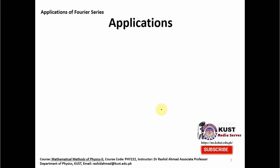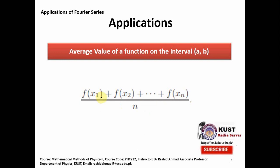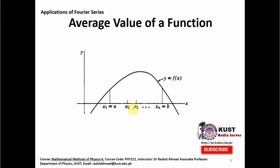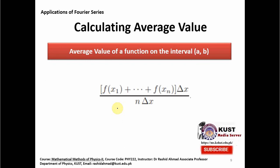To find the average value we sum the values of the function at the interval points — f(x₁), f(x₂), and so on up to f(xₙ) — and divide by the total number of such values. The difference between two neighboring points is Δx. We bring Δx into the average value formula by multiplying numerator and denominator by Δx. Since n·Δx = b − a, multiplying the number of intervals by the size of a single interval gives the total length b − a.